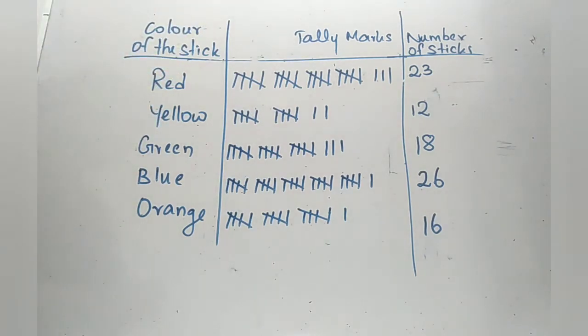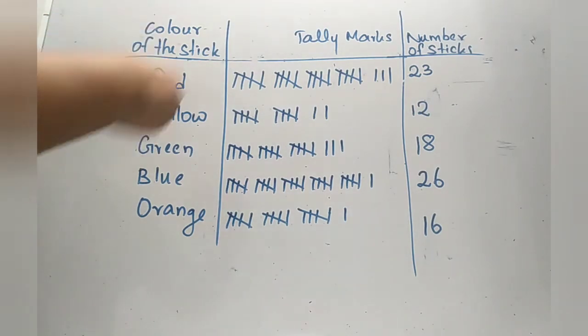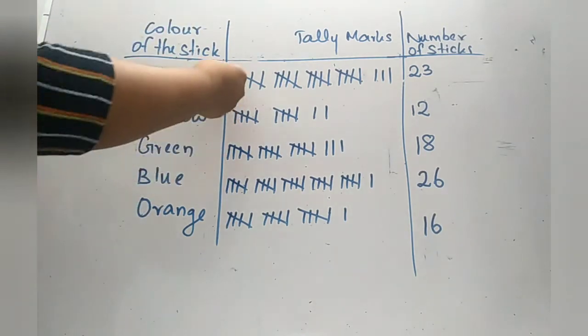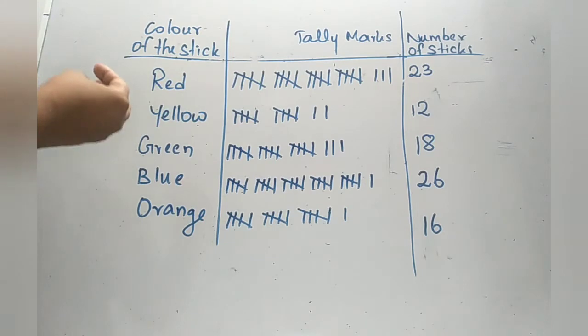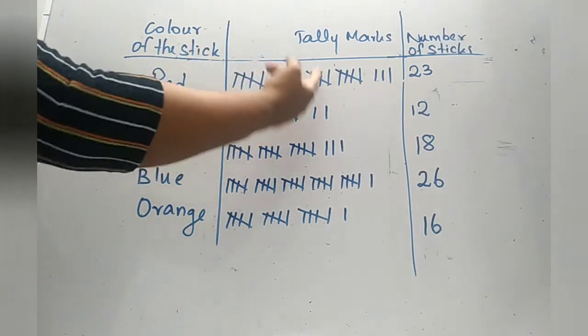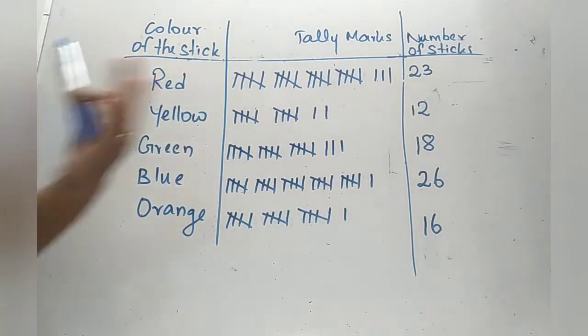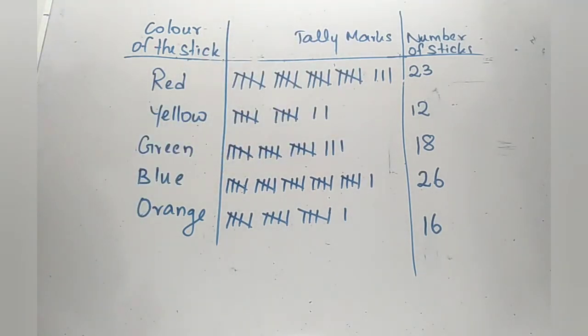Now do you understand how to represent the data with the use of tally marks? This is easy to count as well. Rather than putting the lines only, if you cut across like this it's easy to count in sets of 5. You can easily count 5, 10, 15, 20 and then 3 more, also 23. So this is what tally marks is about. Now you will be able to do few questions from your textbooks regarding this tally marks. Let's move on to the second method.